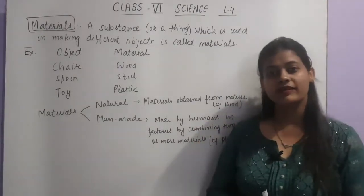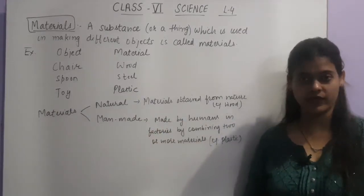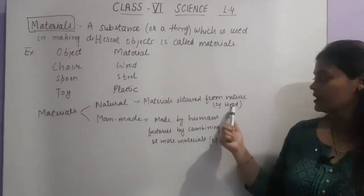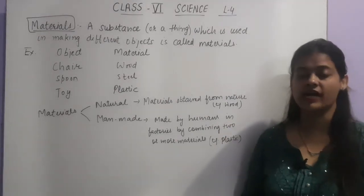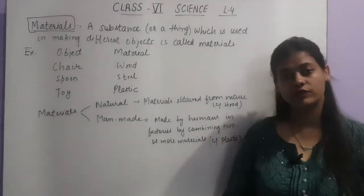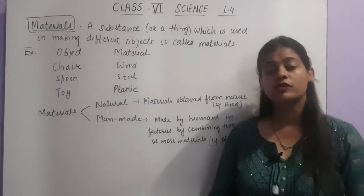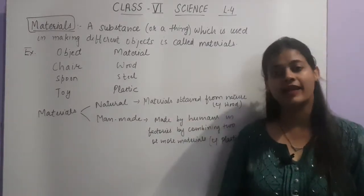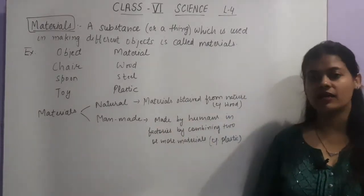Now let's see — materials are of two types: natural and man-made. Natural materials are the materials which are obtained from nature, meaning we get them from nature. For example, wood. Chair is made up of wood, this board is made up of wood, so wood we get from nature — that is why it is called a natural material.